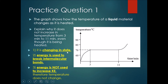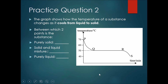Practice question two: the graph shows how the temperature of a substance changes as it cools from liquid to solid. Between which two points is the substance purely solid, a solid-liquid mixture, and purely liquid? Please try this out. It cools from liquid to solid, so the front part with the diagonal will be purely liquid.